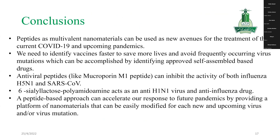In conclusion, the types of multicomponent nanomaterials can be used as new avenues for the treatment of current COVID-19 and upcoming epidemics. We need to identify vaccines faster to save more lives and address frequent mutations, which can be accomplished by identifying approved self-assembled drugs. For example, antiviral peptides like the M1 peptide can inhibit the activity of both H5N1 and SARS-CoV-2.